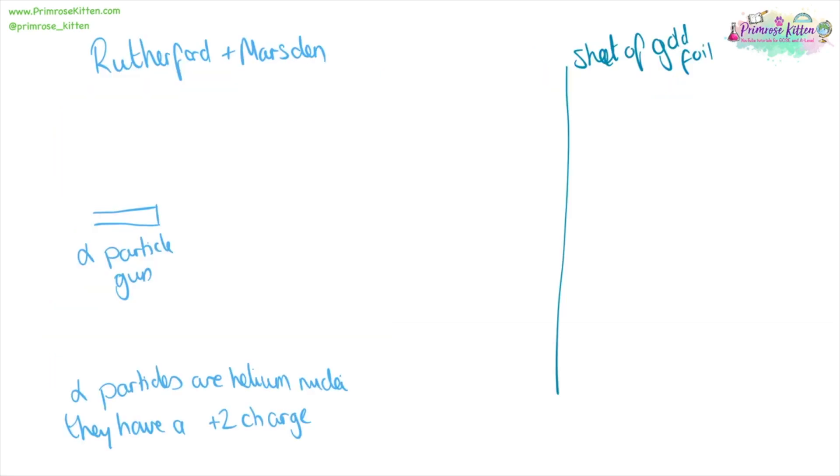Rutherford and Marsden did an experiment to test the plum pudding model. They took an alpha particle gun, and alpha particles are positively charged, and they had a sheet of very thin gold foil. And what they did is they fired alpha particles at this sheet.